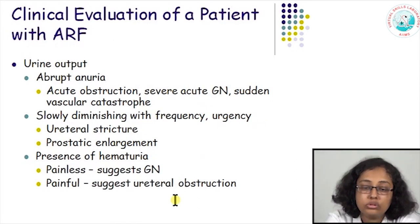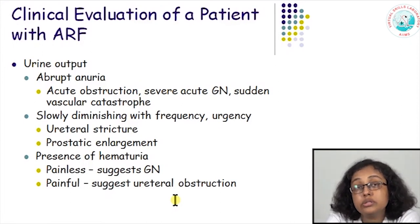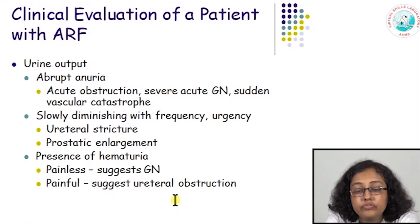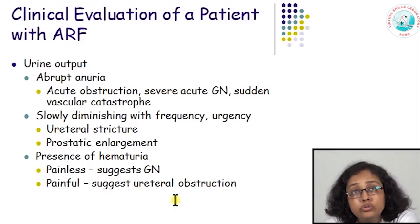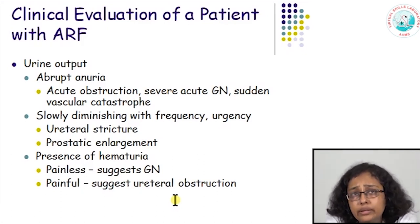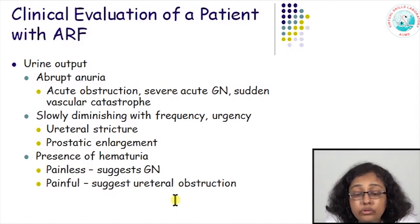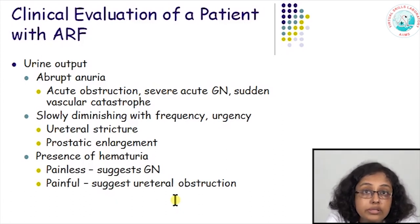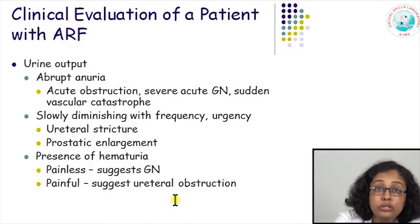The patient's urine output can also suggest the cause. Generally, a patient with AKI will have slowly progressive decline in urine output, but sometimes there may be abrupt anuria — complete absence of urine output, less than 100 ml per day — which could be due to acute bilateral obstruction or a sudden vascular catastrophe like bilateral renal vein thrombosis or renal artery thrombosis. A slowly declining urine output with frequency and urgency could suggest urinary tract infection, prostatic enlargement, or ureteral stricture. Painless hematuria could suggest glomerular disease, while painful hematuria could suggest obstructive malignancy.